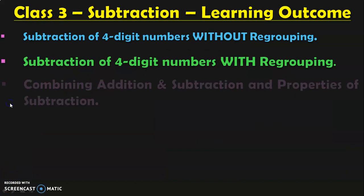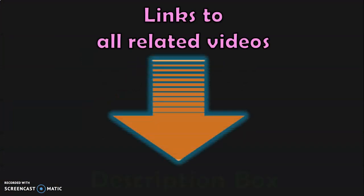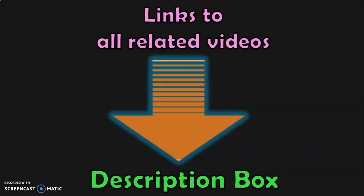Dear viewer, these are all the learning outcomes in class 3 under the topic subtraction for children, of which I have covered the first 3 topics in separate videos — links are given in the description box. In this video, we saw the topic of the relation between addition and subtraction and checking subtraction by addition. In my upcoming videos, we will be seeing story sums, mental math, and subtraction worksheets. Links to all related videos are in the description box, or you may click on the in-screen video to go to the playlist for all class 3 subtraction videos.